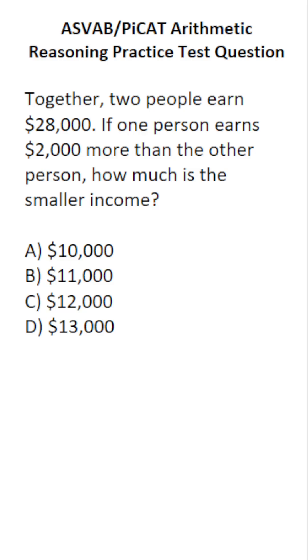This arithmetic reasoning practice test question for the ASVAB and PiCAT says, together, two people earn $28,000. If one person earns $2,000 more than the other person, how much is the smaller income?